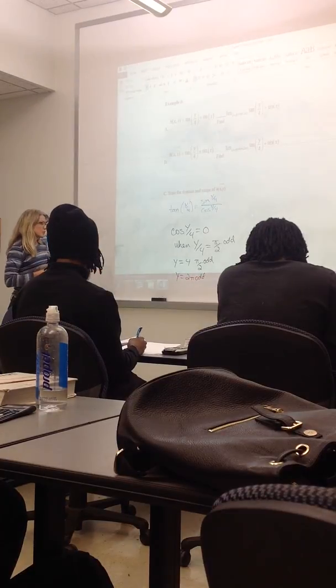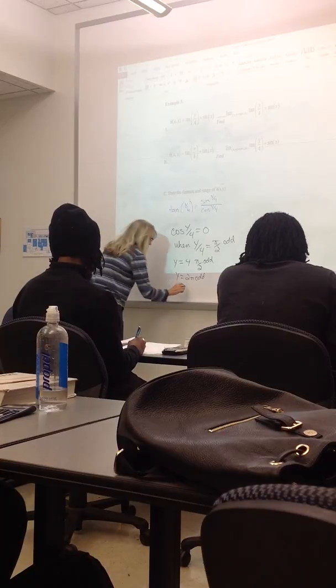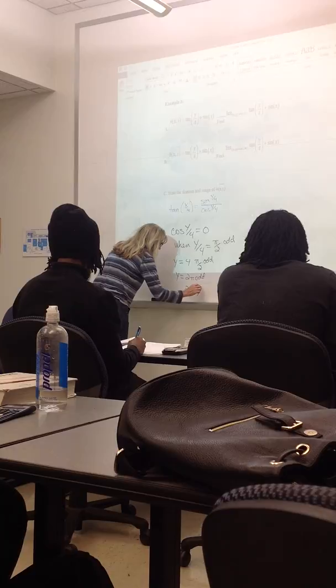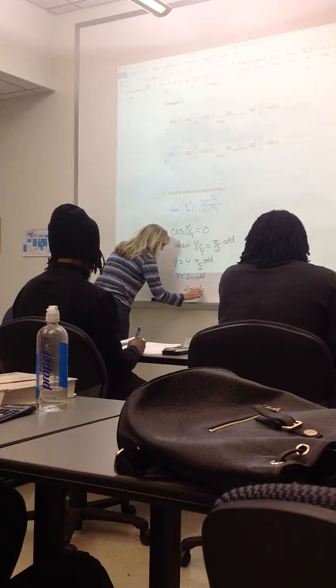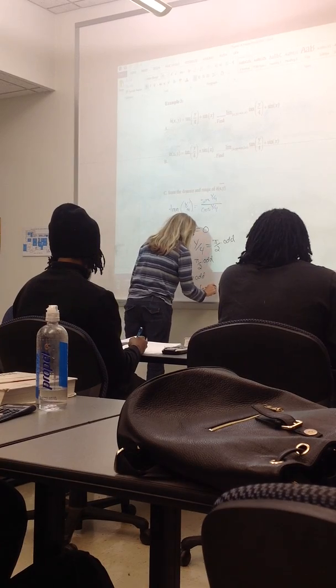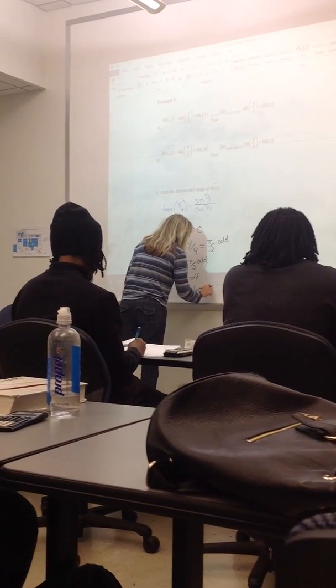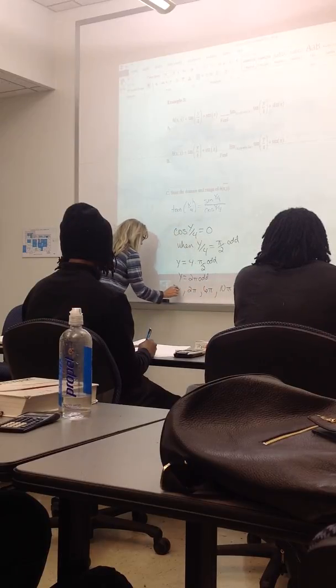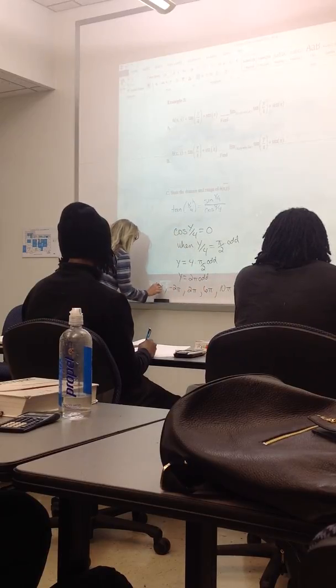So any odd multiple of pi, so what would that mean? Two pi would be an odd multiple of two pi. Six pi would be an odd multiple of two pi. Ten pi would be an odd multiple of two pi. Negative two pi, negative six pi.